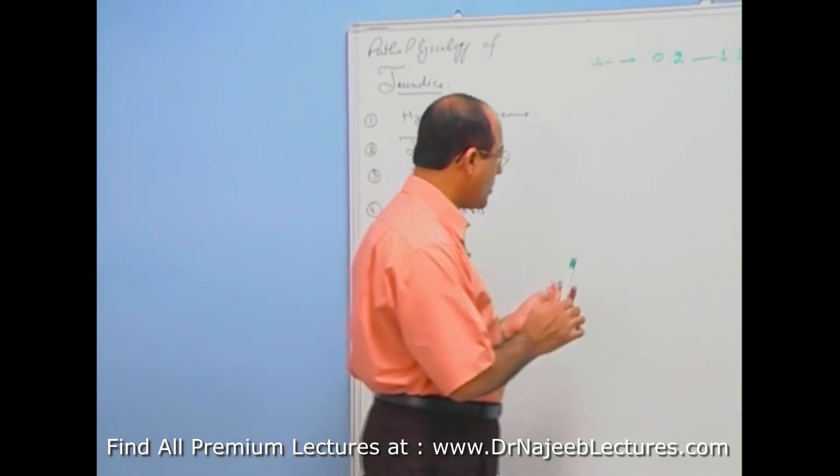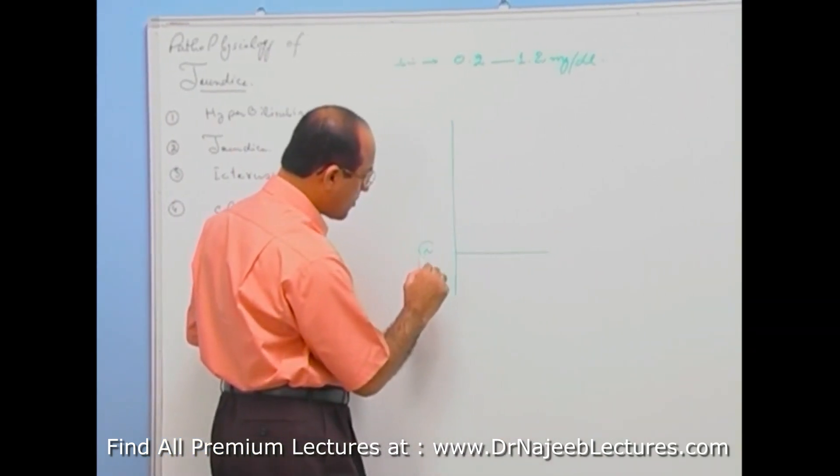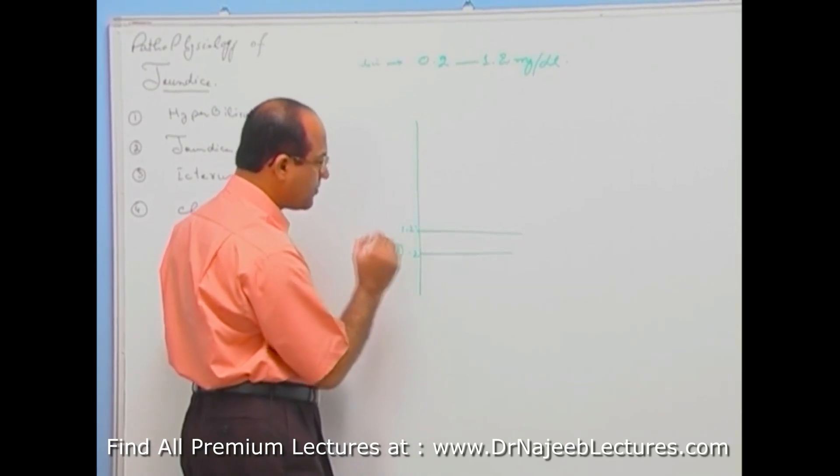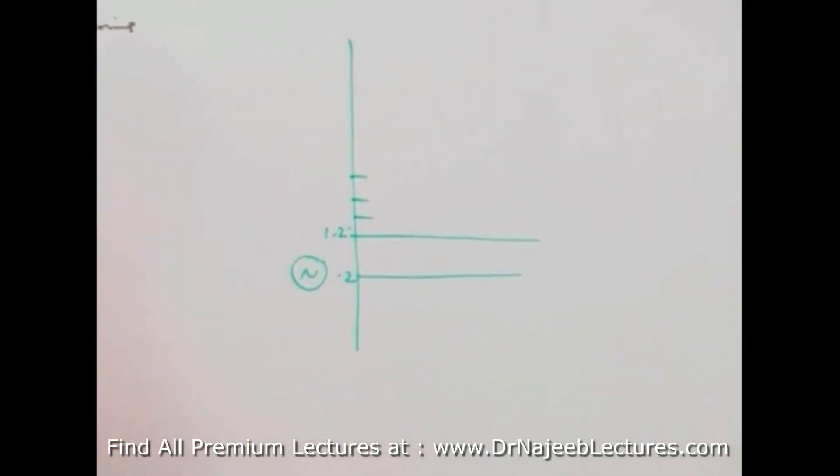this is normal bilirubin level, normal bilirubin level range, right? 0.2 to 1.2. If someone's bilirubin level goes up to this level, is not going to develop yellow coloration of skin or sclera or the mucous membrane or interstitial fluid. Actually,